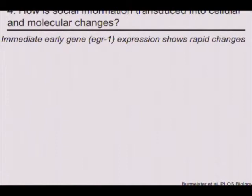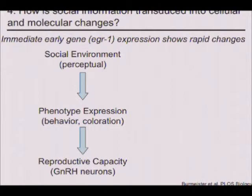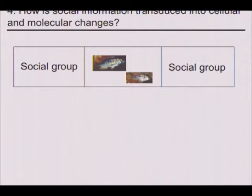Here's the harder question: how is social information actually changed into cellular and molecular changes? We have a social environment that produces a phenotype that changes reproductive capacity. So we decided to perform what we call now a 'boolectomy' — we remove the dominant male and can change the fish from a non-dominant to a dominant male. We go in with an infrared viewer at night, remove the bully, and at sunrise, this guy wakes up and sees the bully is gone.